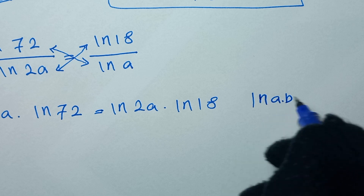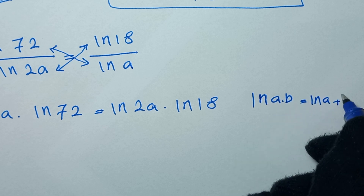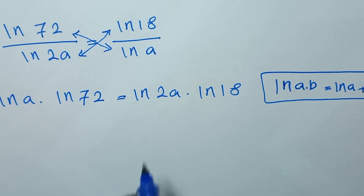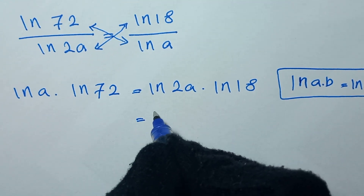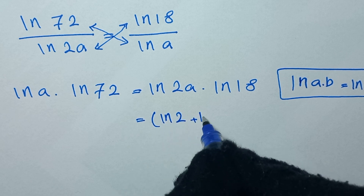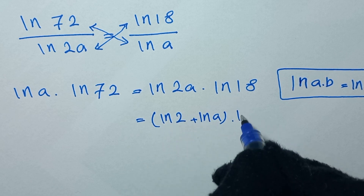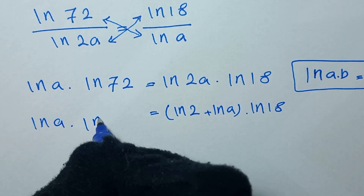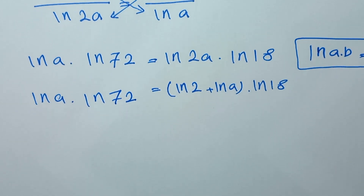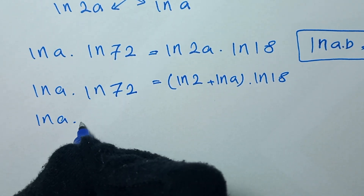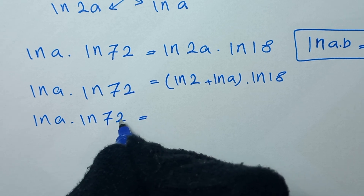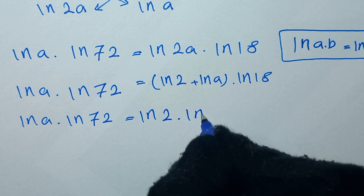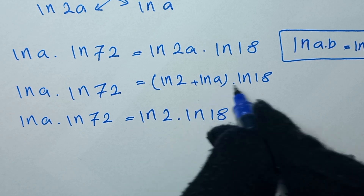From log rules, ln of a times b can be written as ln of a plus ln of b. So we can write ln of 2a as ln of 2 plus ln of a, and multiply by ln of 18. So we have ln of a times ln of 72 is equal to ln of 2 times ln of 18 plus ln of a times ln of 18.